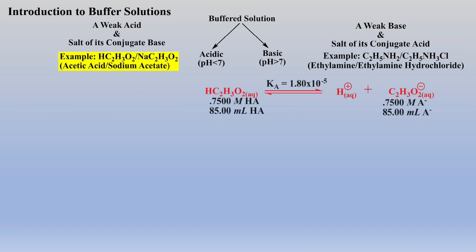To help us better understand how a buffer solution resists change in pH when either a base or acid is added, let's add some base to the acidic buffer solution shown, and some base to pure water, and see how these two solutions react when the same amount of base is added to each. In other words, how will the pH change for these two solutions, one buffered and one not?